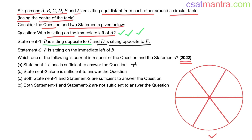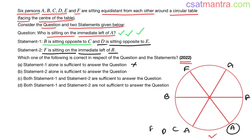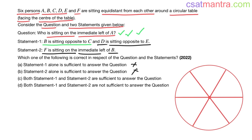Statement 2: F is sitting on the immediate left of B. Taking B's position here with F immediately to the left — E can be in multiple positions, giving different arrangements. You can have C, D, or E in different spots, giving three different answers. So Statement 2 also doesn't answer our question — you need a single answer.